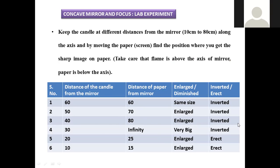Record whether the image is enlarged or diminished, inverted or erect. The data collected shows: when the candle distance from the mirror is 60 cm and the paper distance from the mirror is also 60 cm, the size remains the same as the original — because both are at the same position. The concave mirror always gives an inverted type of image in general.